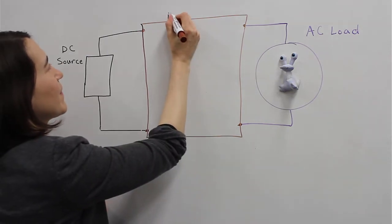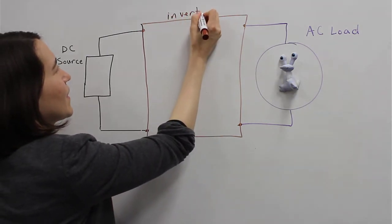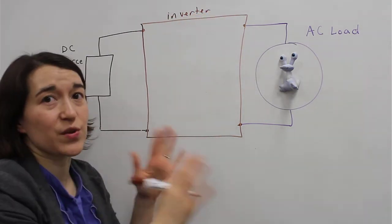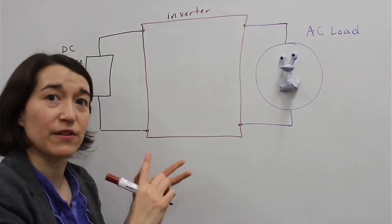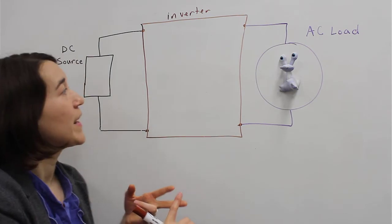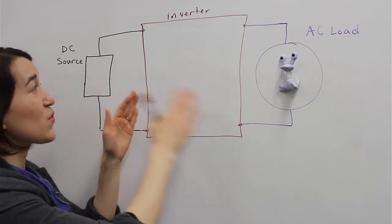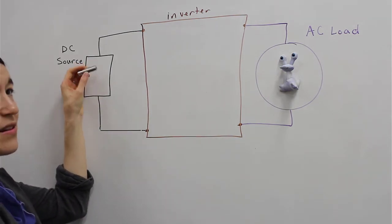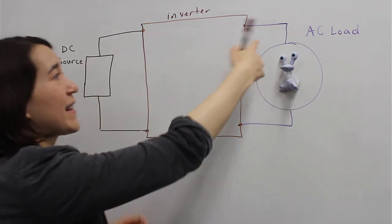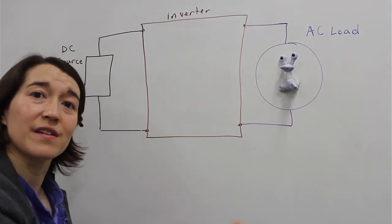The inverter consists of lots of little switches, and we'll talk about two topologies, the half bridge and the full bridge inverter. In here you use switches to essentially take your DC source and switch it positive and negative, so that your AC load will see those different voltages.